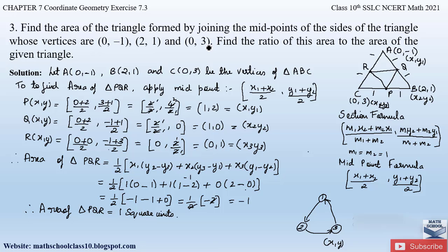We have found the area of the triangle formed by the mid points of the sides of the given triangle. Now the second part asks for the ratio of this area to the area of the given triangle ABC. We already know the area of triangle PQR, so let us find the area of triangle ABC using the same formula.